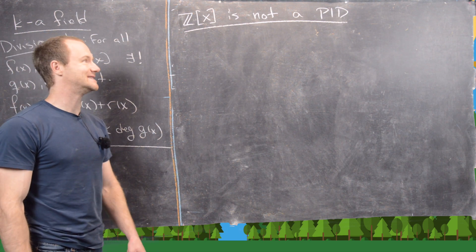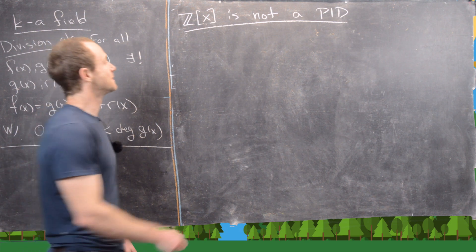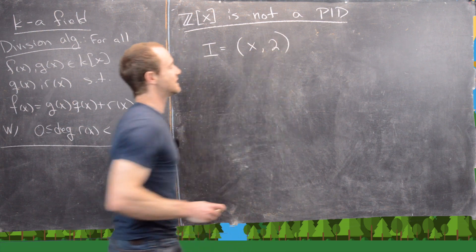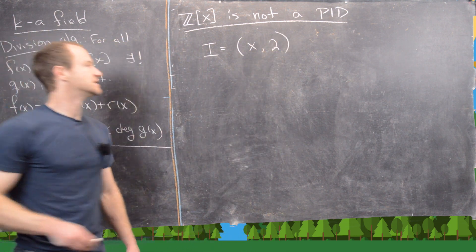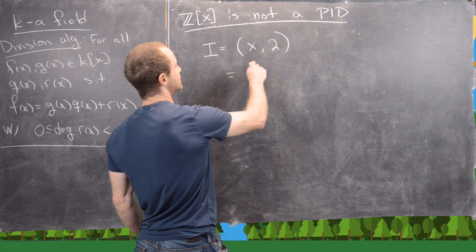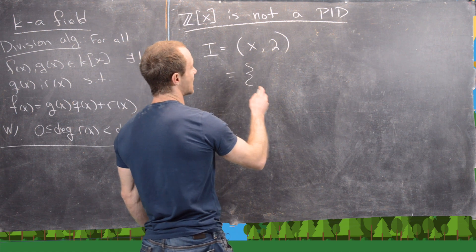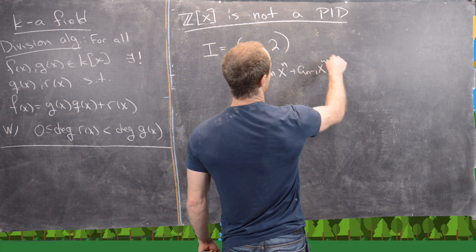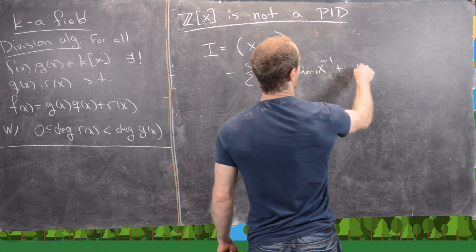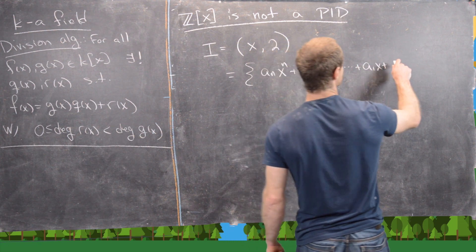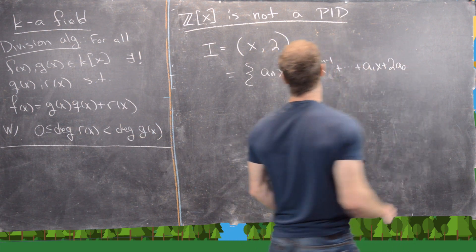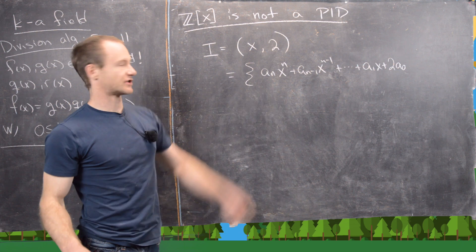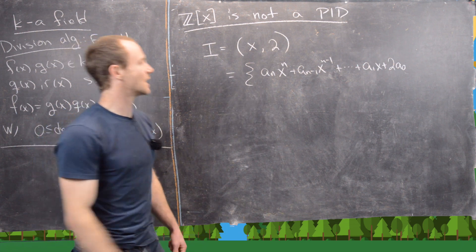We can find an ideal in Z[x] which is not principal. The example we'll use is the ideal I generated by x and the number 2. This is equal to all polynomials of the form aₙxⁿ + aₙ₋₁xⁿ⁻¹ + ··· + a₁x + 2a₀, where the aᵢ's are integers. Notice every constant element here will be even, because it's generated by the element 2.